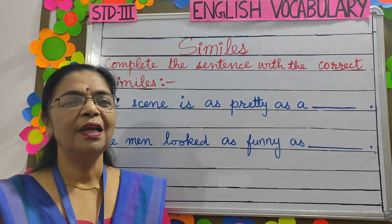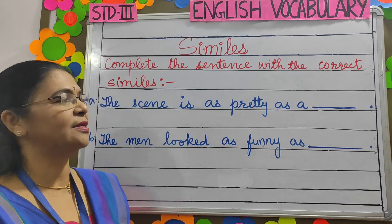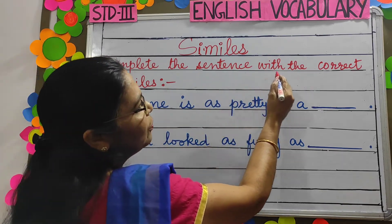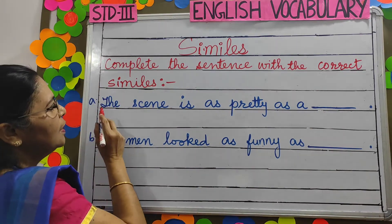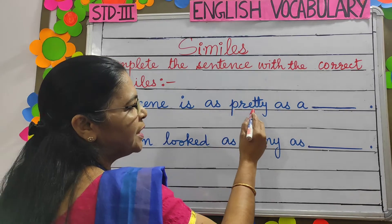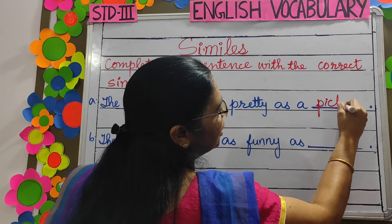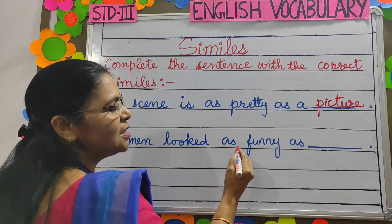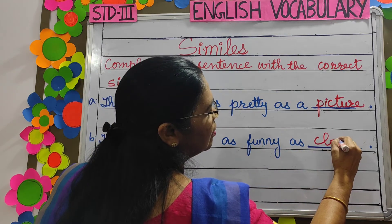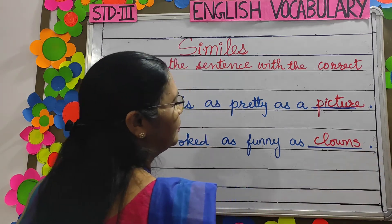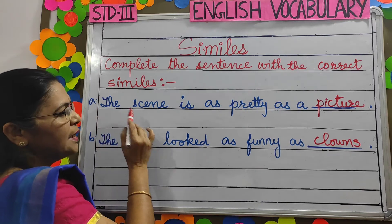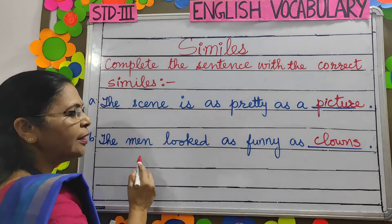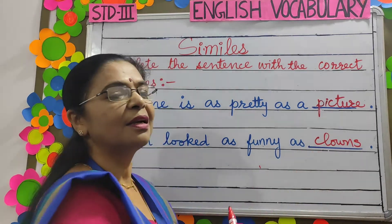Now children, let's learn to use similes in sentences. Complete the sentence with the correct similes. The sea is as pretty as a picture. The men look as funny as clowns.